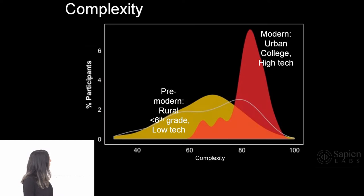If you take people in urban environments - modern, urban, college-educated, high-tech people - and those in very low-tech, rural, less than sixth grade, maybe poorly literate if literate at all, you're starting to see two very different distributions of brains. You can see that this whole urbanization and all the things that come with it have really changed profoundly on this dimension and many other dimensions what our brains are actually doing.